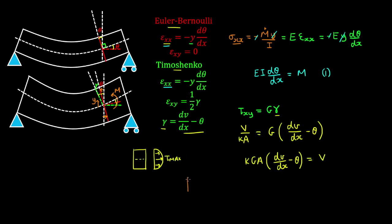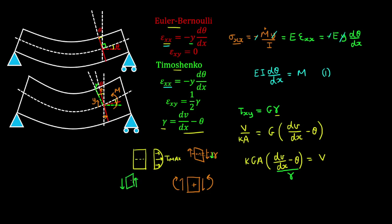Recall that our sign convention was: a positive shear couple acts in a specific direction with sagging moments on the cross section. This shear couple distorts the section causing a clockwise shear deformation. Since we took counterclockwise angles as positive, a positive shear couple causes a negative shear deformation, while a negative shear couple causes a positive shear deformation. We can therefore rewrite the expression accordingly.